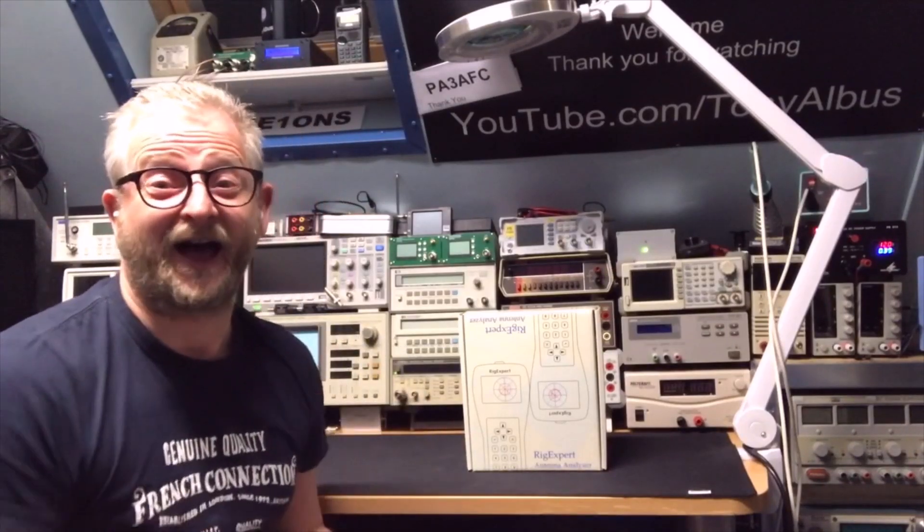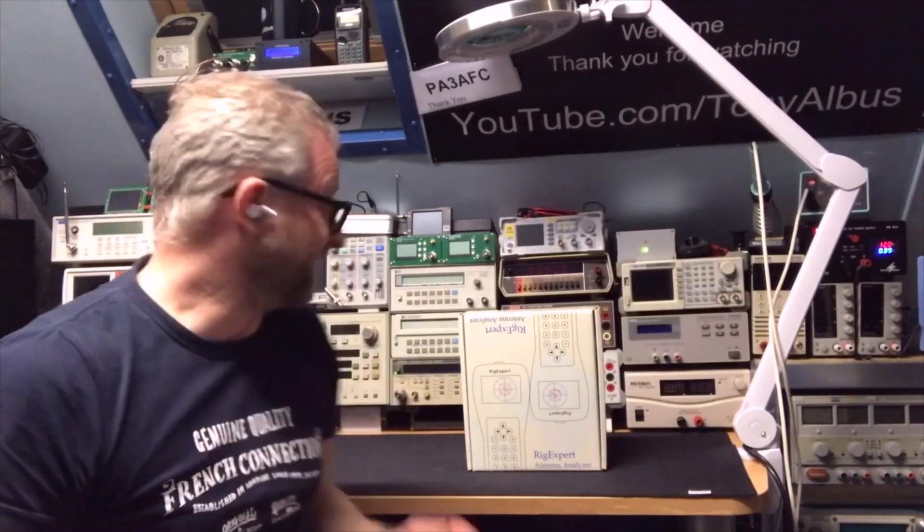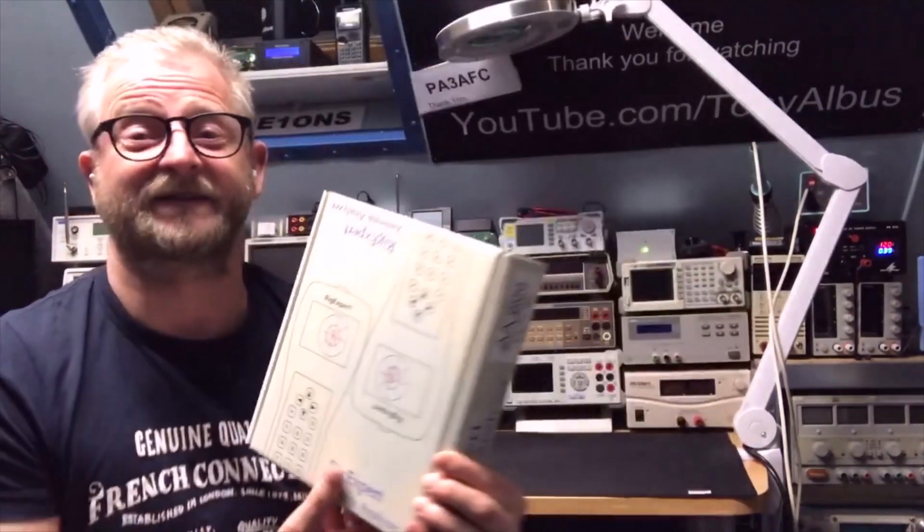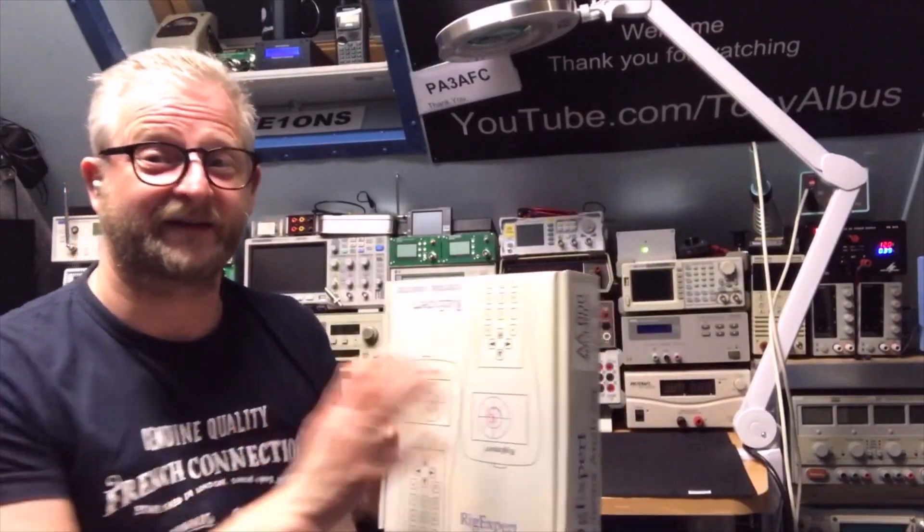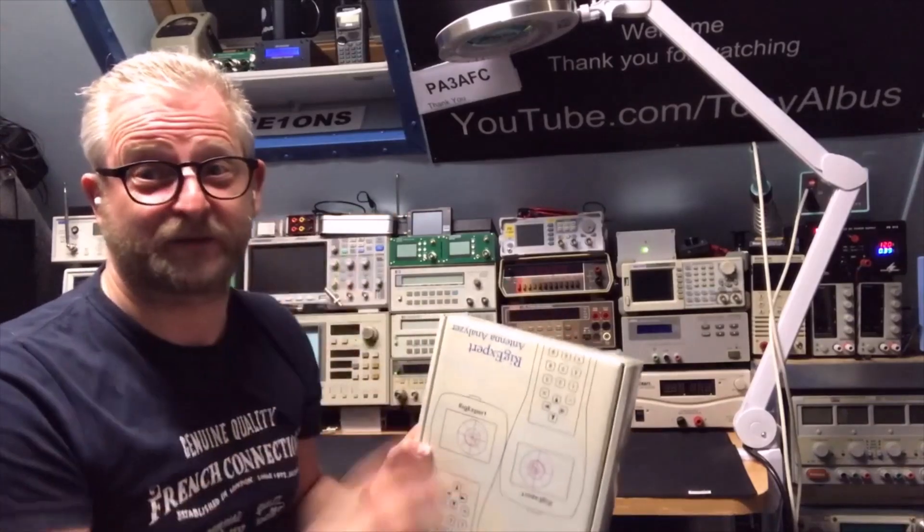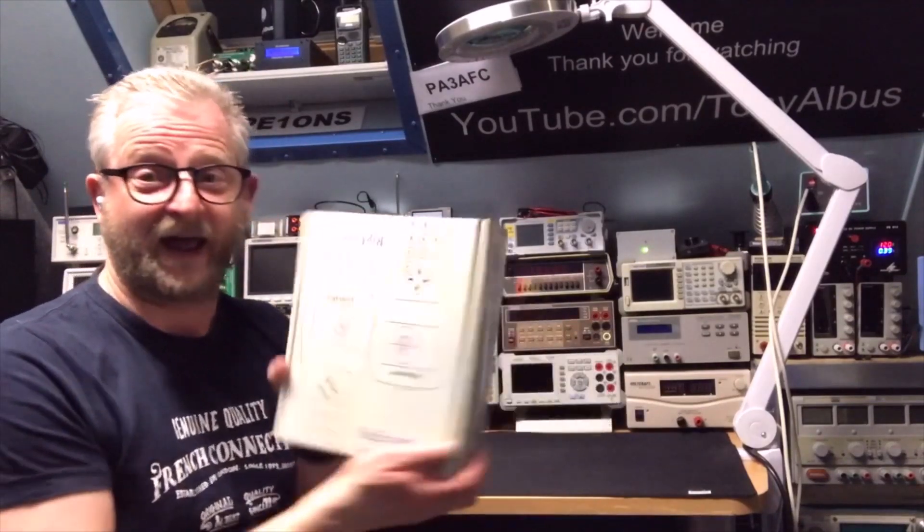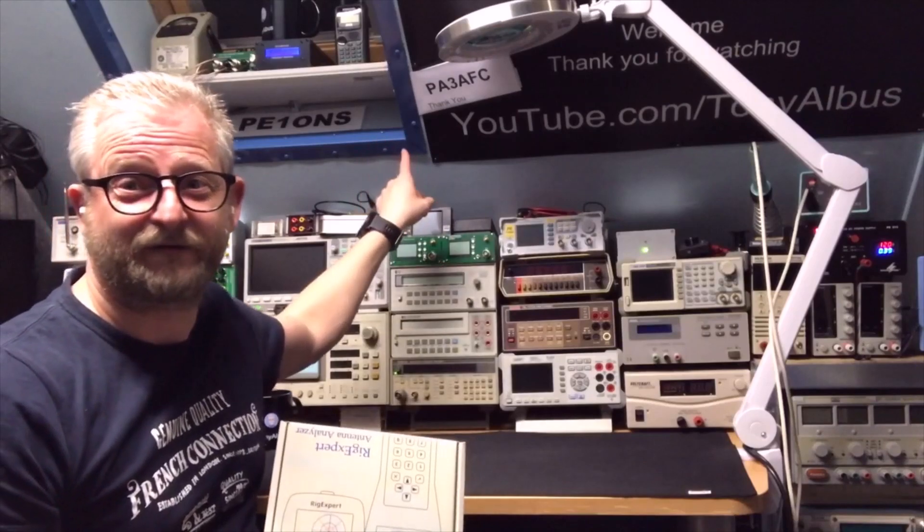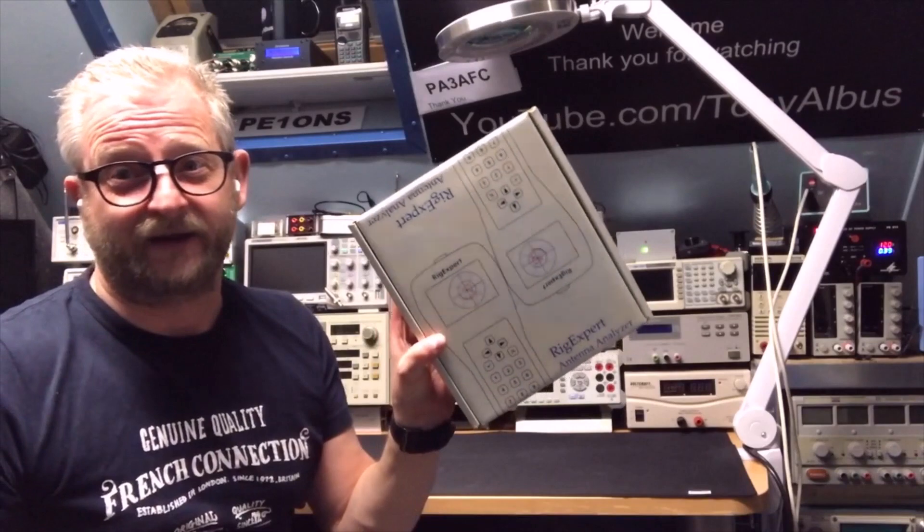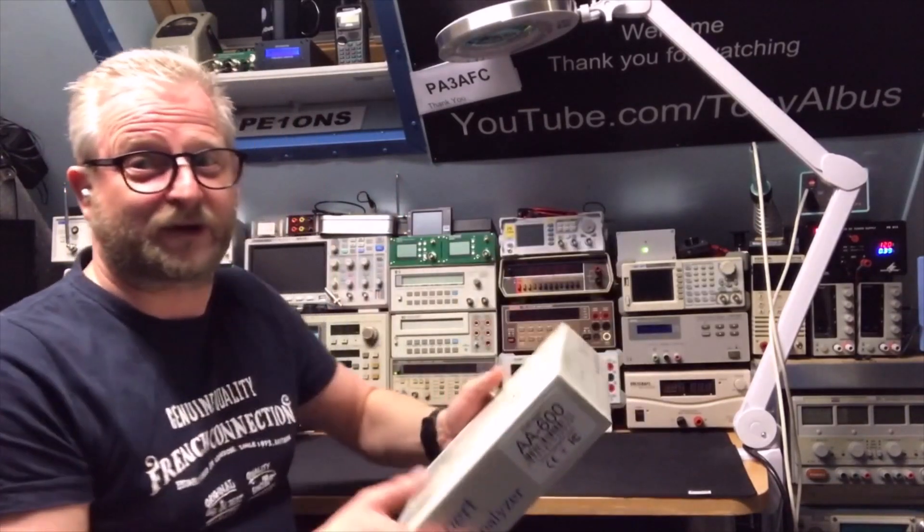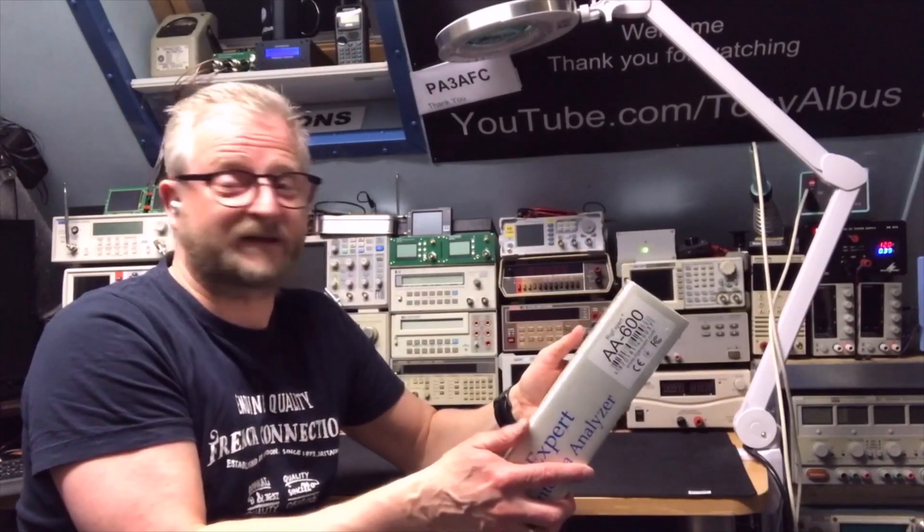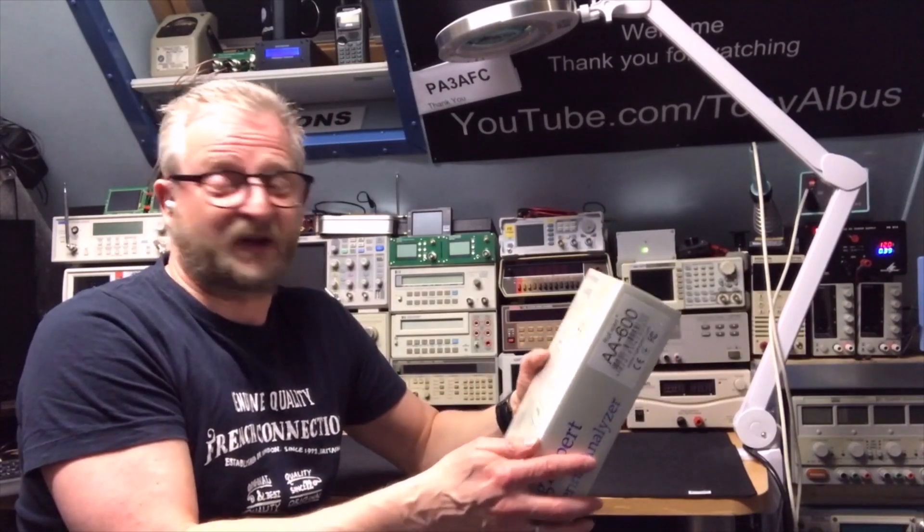Hello and welcome back. Today I have something cool and that is the RigExpert antenna analyzer, and this is the AA600. So antenna analyzer 600 goes up to 600 MHz and it's not mine, it's again from my uncle George and we're just going to play with it. It's probably way too advanced for what I'm going to use it for, but I will just want to test it a little bit with an antenna and see what it actually does.